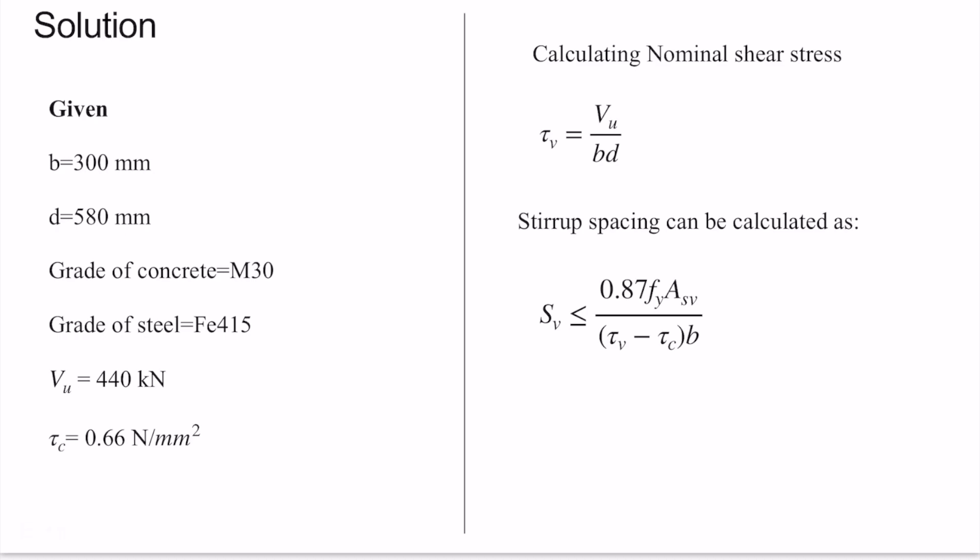First, we have noted all the things given to us: the value of width b, effective depth d, grade of concrete M30, grade of steel for tension reinforcement and stirrups Fe415, the factored shear force, and the value of τ_c which is 0.66 N/mm².